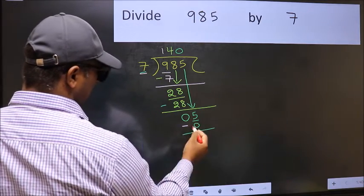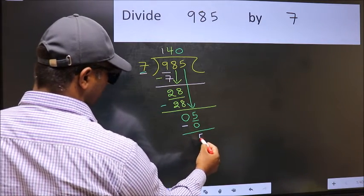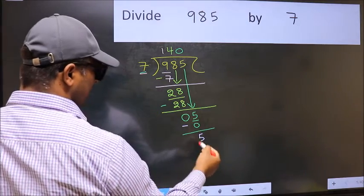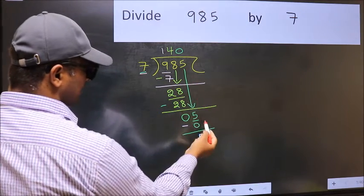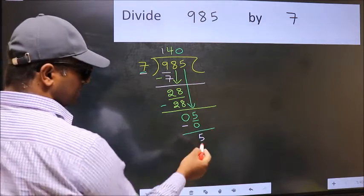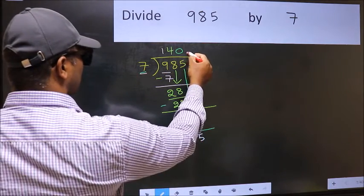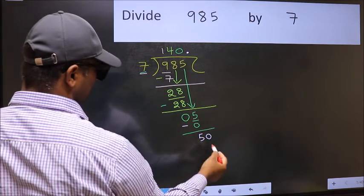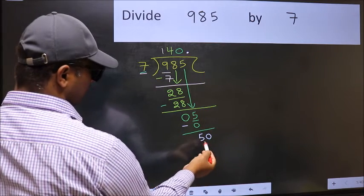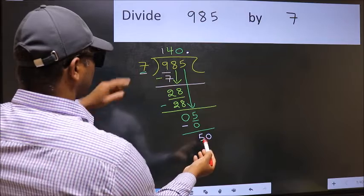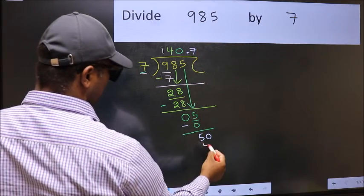Now you should subtract: 5 minus 0 is 5. Over here, we did not bring any number down, and 5 is smaller than 7. So now you can put a dot and take 0, so 50. A number close to 50 in the 7 table is 7 times 7, 49.